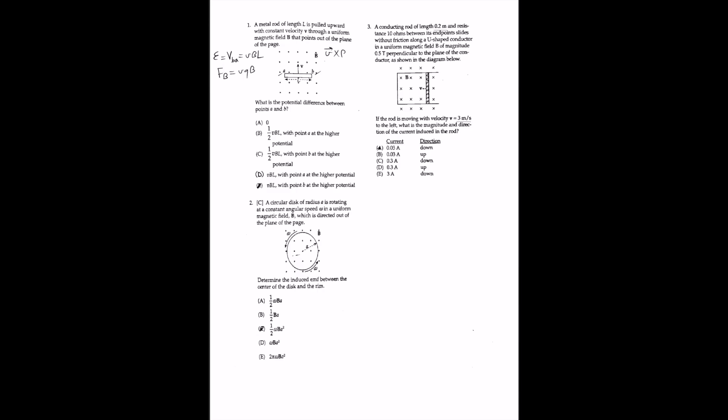When the rod moves through the magnetic field, the charges within the rod feel a magnetic force F_B equal to VQB. The direction of this force is in the direction of V cross B for positive charges, and opposite to that direction for negative charges.